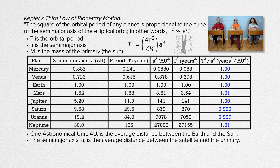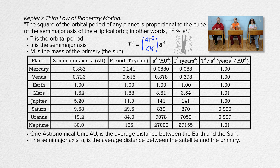We based all our numbers on the Earth, so of course period squared over semi-major axis cubed equals one. The semi-major axis of the Earth is defined to be exactly one astronomical unit. The orbital period of the Earth is exactly one year. One squared over one cubed equals one. And Kepler's third law states that all the planets should have the same constant value, so nothing magical — we just used units to make it so the period squared over semi-major axis cubed for every planet should equal one.